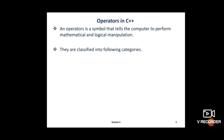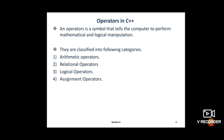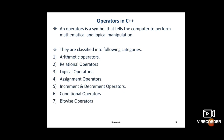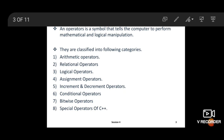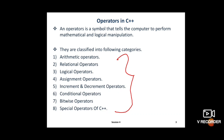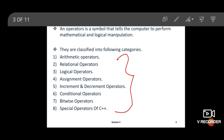Operators in C++ perform mathematical and logical manipulation. Now, let's see the different types of operators in C++, classified into the following categories: first, arithmetic operators; second, relational operators; third, logical operators; fourth, assignment operators; fifth, increment and decrement operators; then conditional operators, bitwise operators, and special operators of C++. In this session we are going to learn only arithmetic operators.